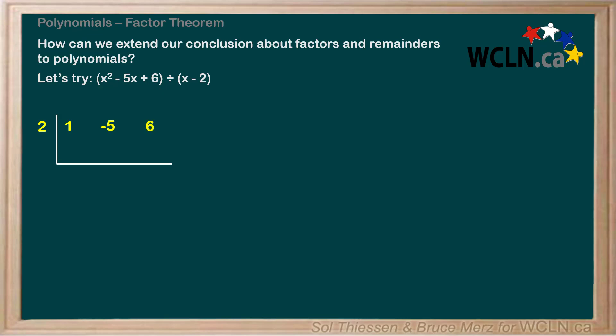Remember, the first step is always to bring down the first coefficient. Then we multiply the first coefficient by the a value outside the box, giving us 2, which we write under the next coefficient. We then add, not subtract, as is the case in long division, the negative 5 and the 2, to give us negative 3.